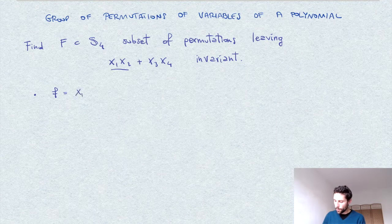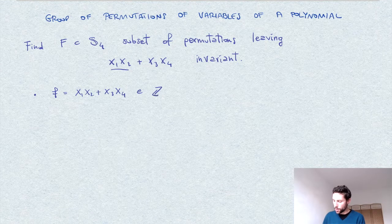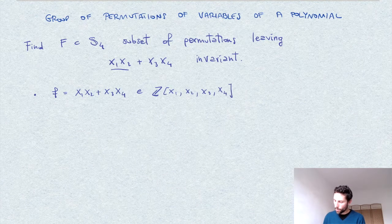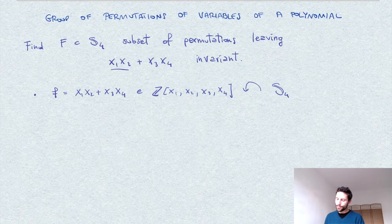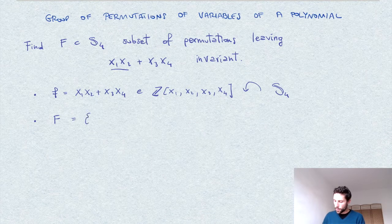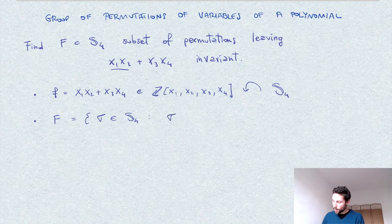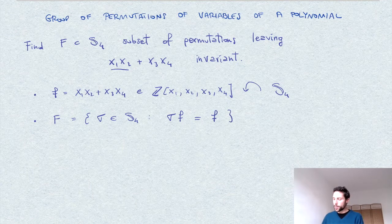This setting can be interpreted as follows. We have the polynomial F in the polynomial ring with coefficients Z and four variables. We have an action of the symmetric group S_4, which is the obvious one permuting the independent variables and therefore automatically acting on all polynomials. The capital F is described as the set of permutations in S_4 that, with respect to this action, leave F invariant — in other words, this is the stabilizer group of F.